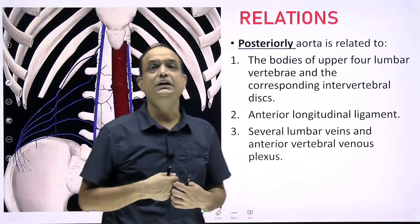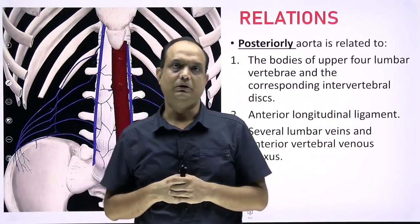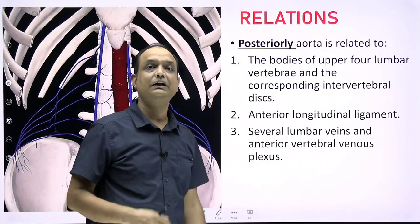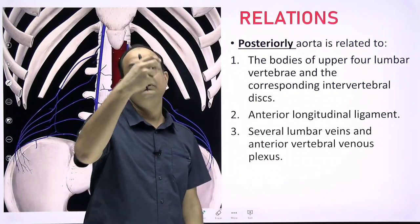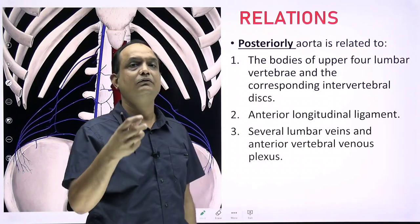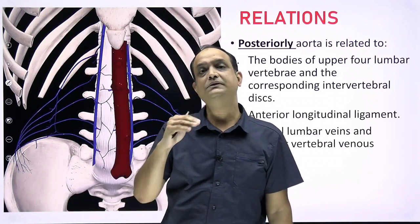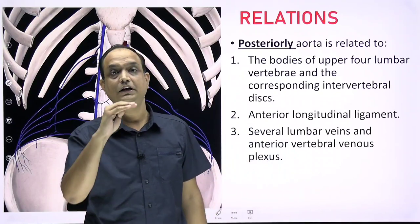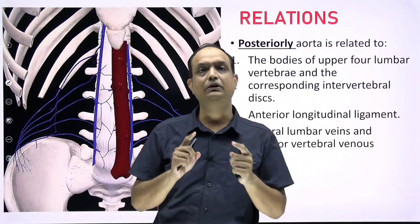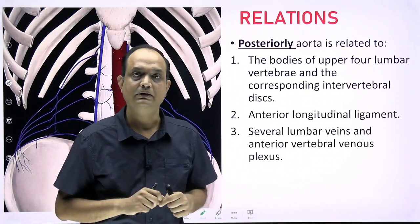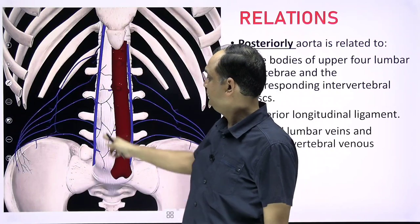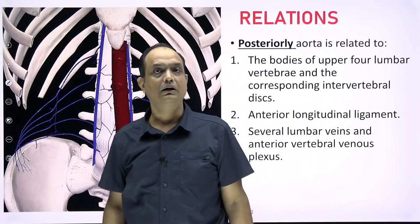Now, the posterior relations of the abdominal aorta: posteriorly, the aorta lies in front of the vertebral column. Since the aorta extends from T12 to L4, it is related posteriorly to the lower part of T12, L1, L2, L3, and L4 vertebrae — four to five vertebrae present on the posterior side of the abdominal aorta.